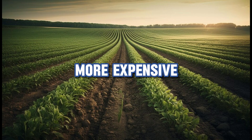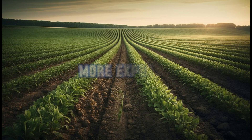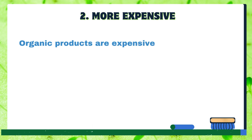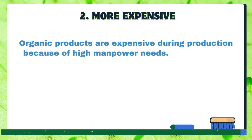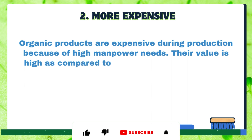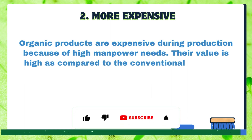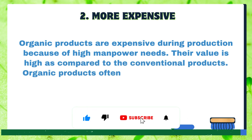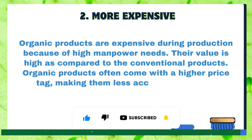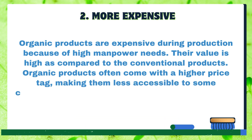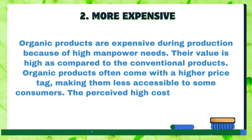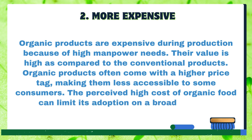Organic products are expensive during production because of high manpower needs. Their value is high as compared to conventional products. Organic products often come with a higher price tag, making them less accessible to some consumers. The perceived high cost of organic food can limit its adoption on a broader scale.